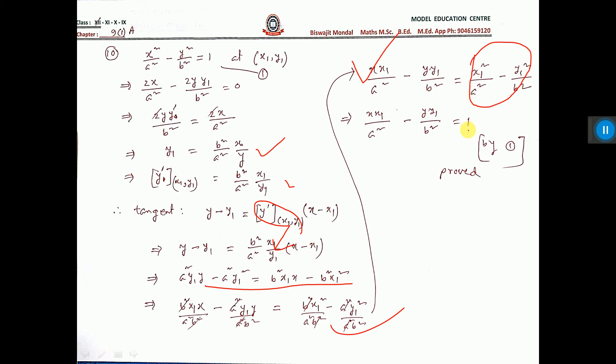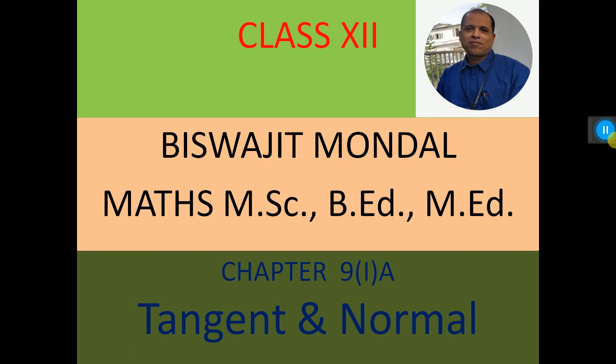Why? Because at the point x1 y1, you put here x1, so x1 by a square, y1 by b square equal to 1. That is why this one equal to 1 I have written. And the proof has come. So, that is the sum.